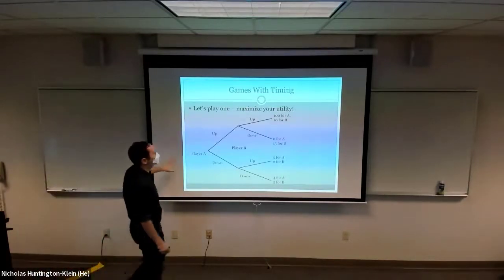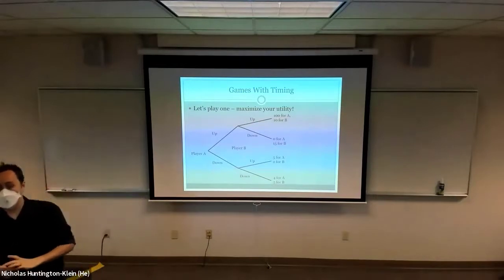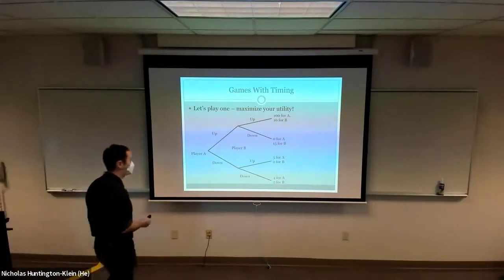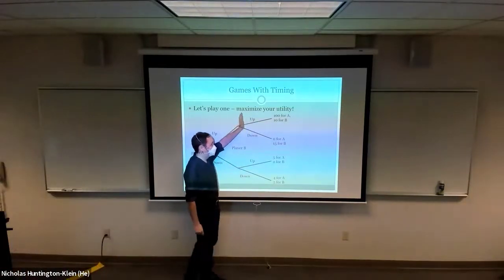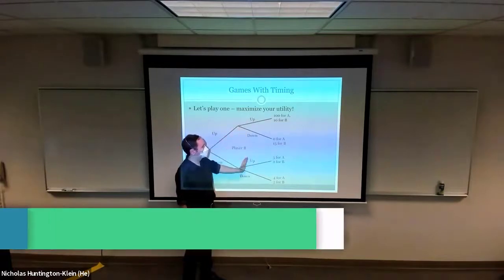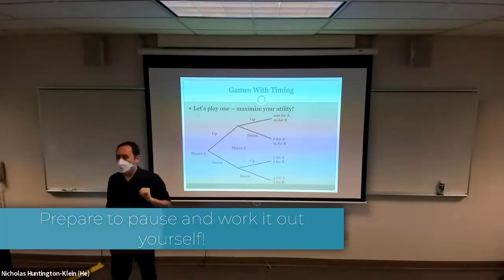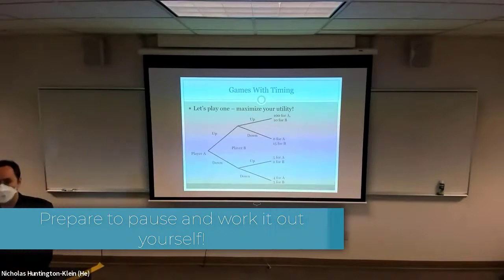So let's take this as an example. Go ahead and try to figure out what the Nash equilibrium is for this game. Remember, you're going to work backwards, try to figure out how they're going to respond in each of these cases. Based on that, you're going to be able to figure out what player A is going to want to do, what's their best response.